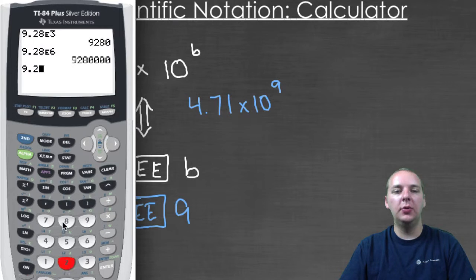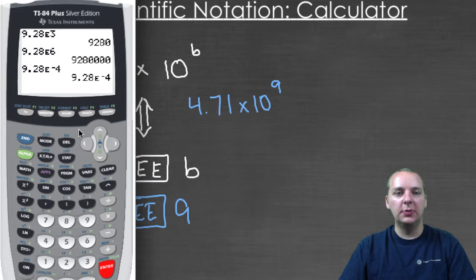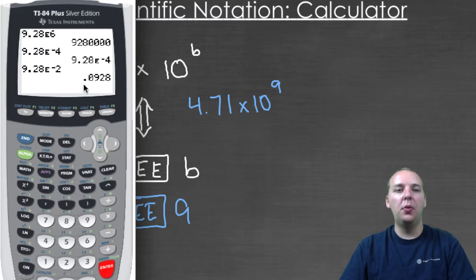If we had nine point two eight times ten to the negative two, that would give us point oh nine two eight, because we moved it to the left two places.